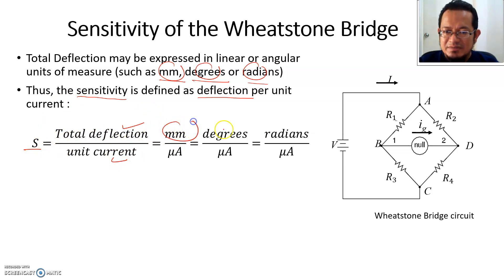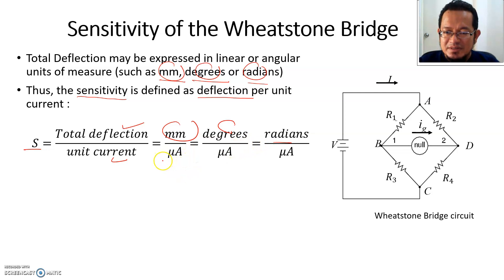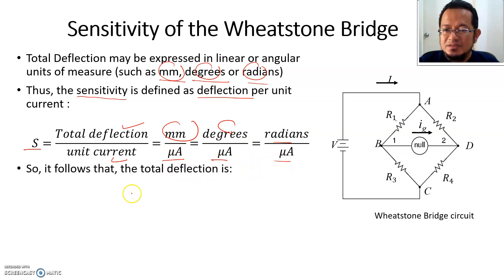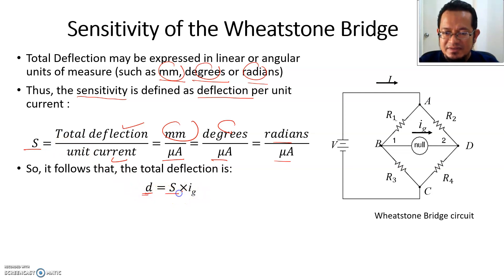S, the sensitivity, is equal to total deflection divided by unit current. If you are given in millimeter, degrees, or radians, it doesn't matter, but the denominator should be the unit current in microamps. It follows that the deflection can be calculated by simply multiplying the sensitivity of the meter multiplied by the galvanometer current IG.